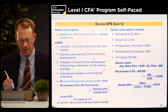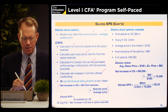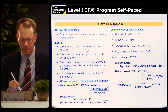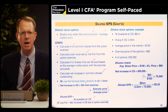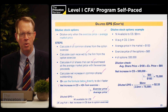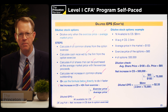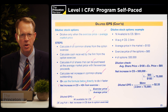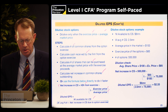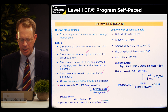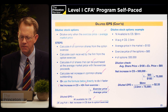Diluted earnings per share will be the net income available for common shareholders — the same amount used in basic earnings per share if there are no other diluted securities. We start with the numerator from the basic EPS computation, then adjust the denominator for the net increase in common shares due to the option exercise.